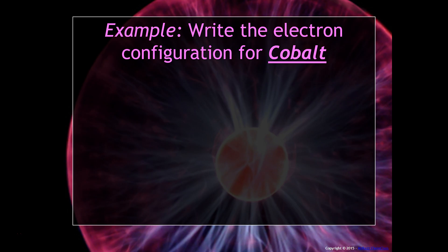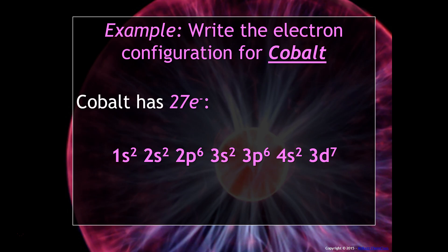Let's try it for an even bigger element, like cobalt. 27 electrons. This is what it would look like.